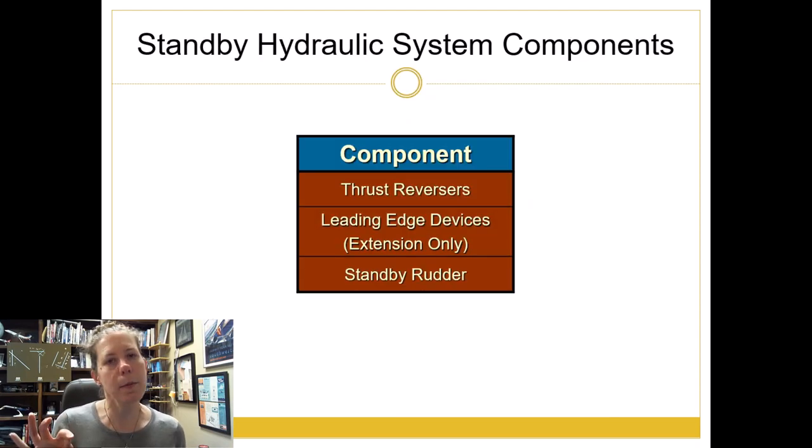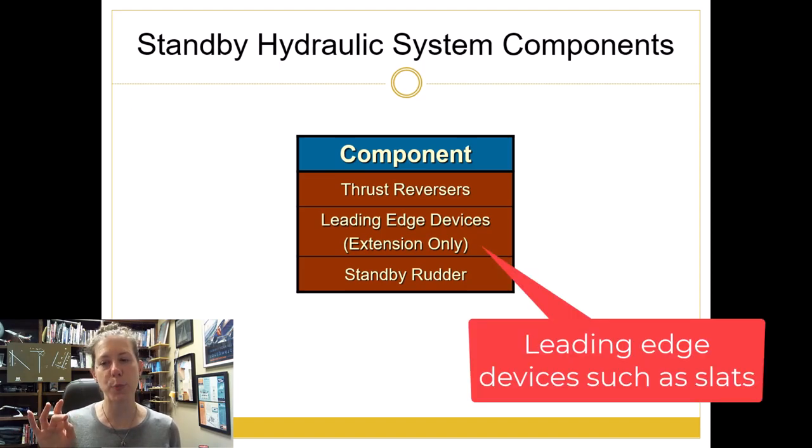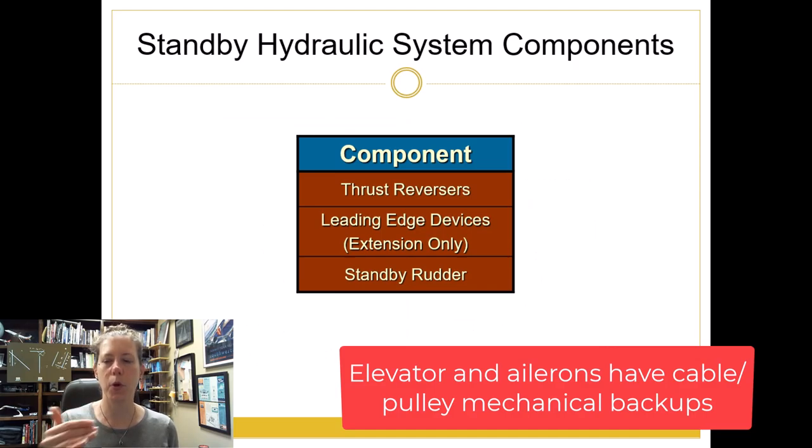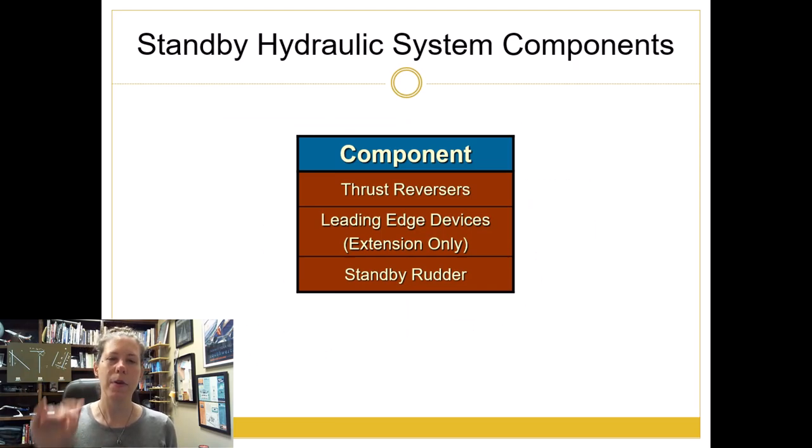So here we have the standby hydraulic system components. You can see there's not really much on the standby system alone. We have our thrust reversers. We would want those available to stop the airplane if we were to lose both System A and B. We want our leading edge devices so we can extend those slats, slow the airplane down for a landing as normal as possible. And then we also really need that rudder. Notice we don't have the elevator or the ailerons on here because they are on both A and B, and plus I mentioned they have cable backups. So there's actually already a backup system for those systems. But for the rudder, we have A, B, and then standby hydraulic system as the other backup.